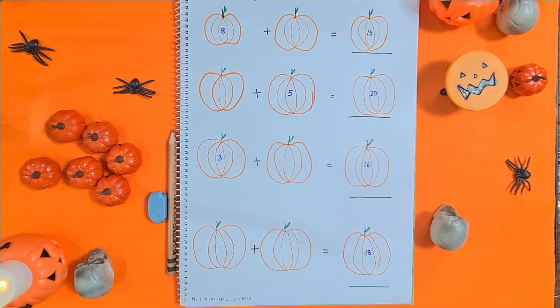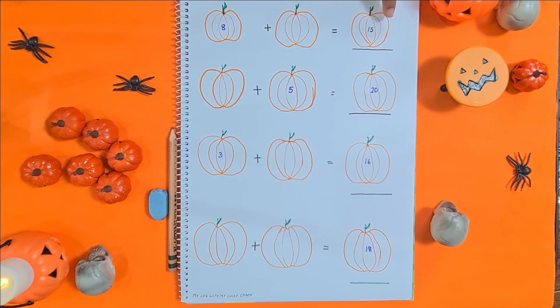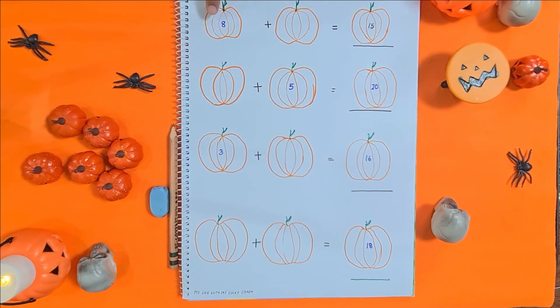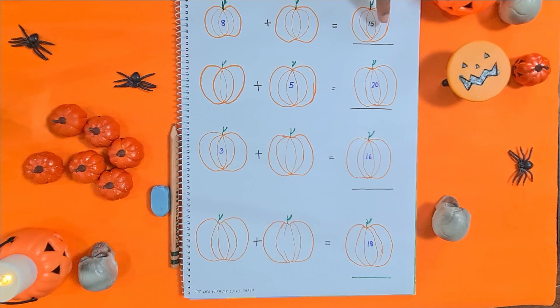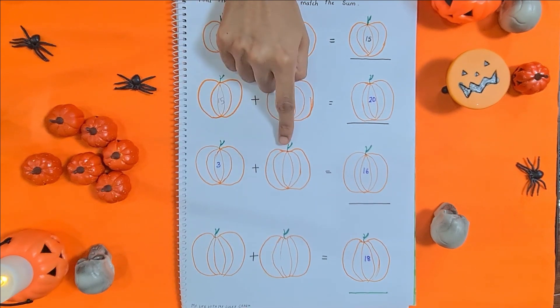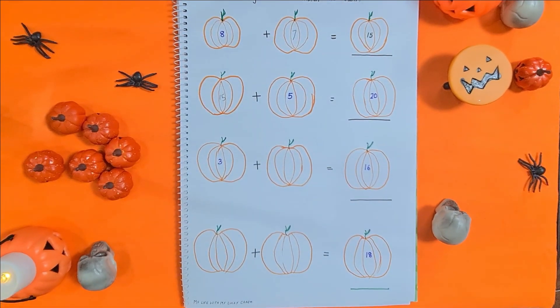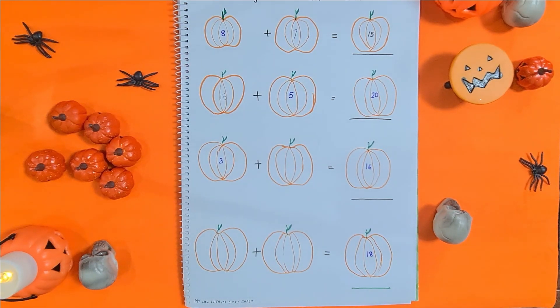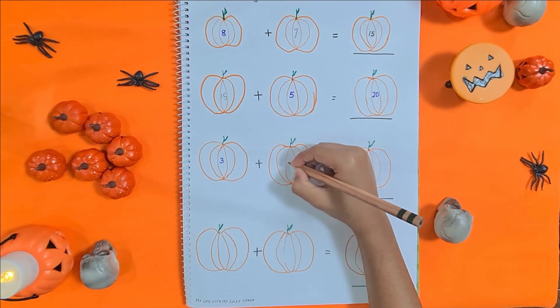The next activity is find the missing number to match the sum. The sum here is 15, so he needs to find out what plus what makes 15. Are you ready? Yeah. We need to find out three plus what makes 16. Okay, three and seven makes ten, then ten and six makes 16, and seven, seven and six makes 13, so 13 is the answer. Three and 13 makes 16.